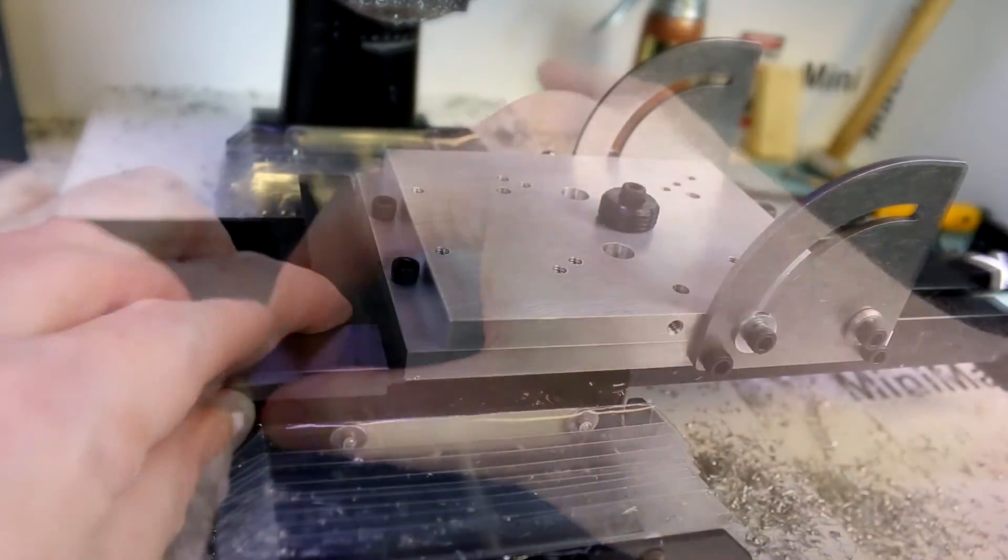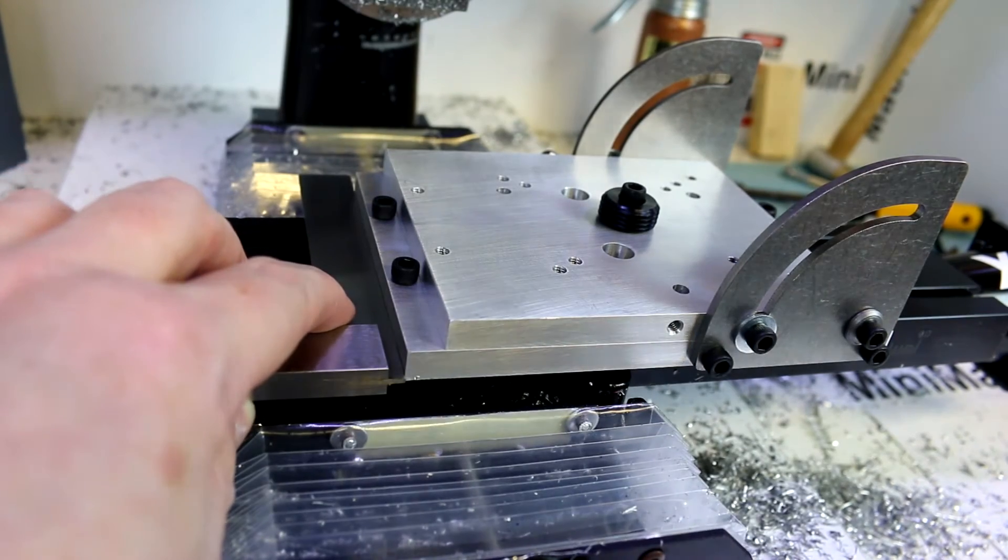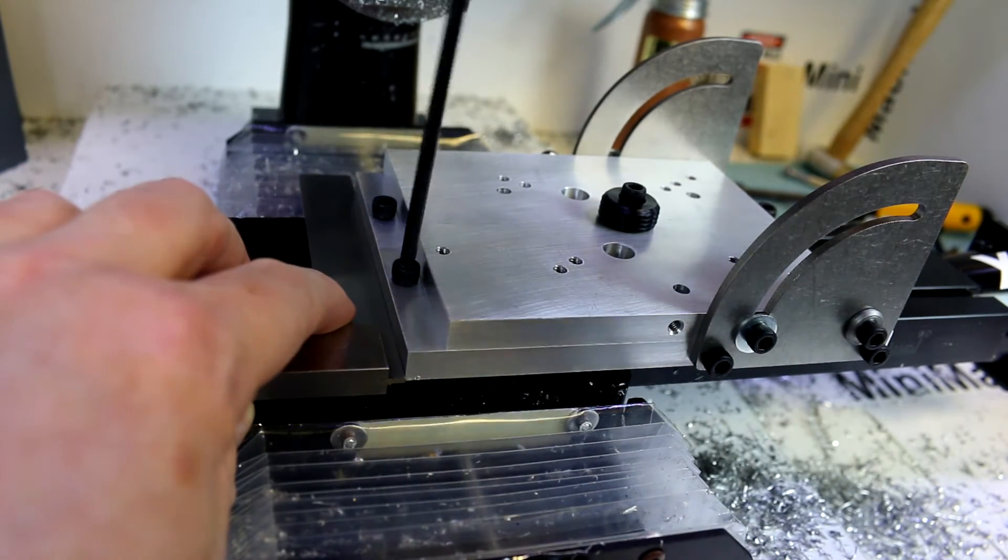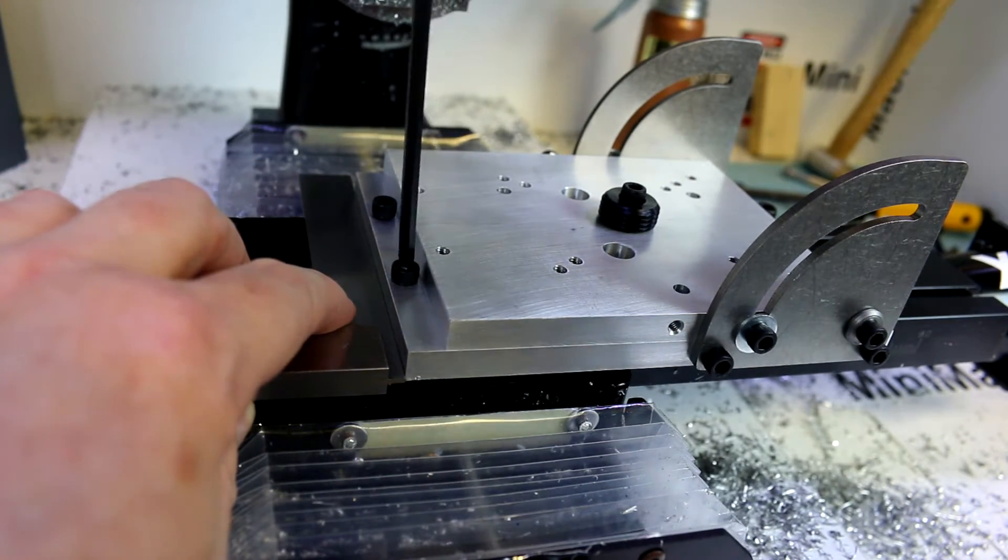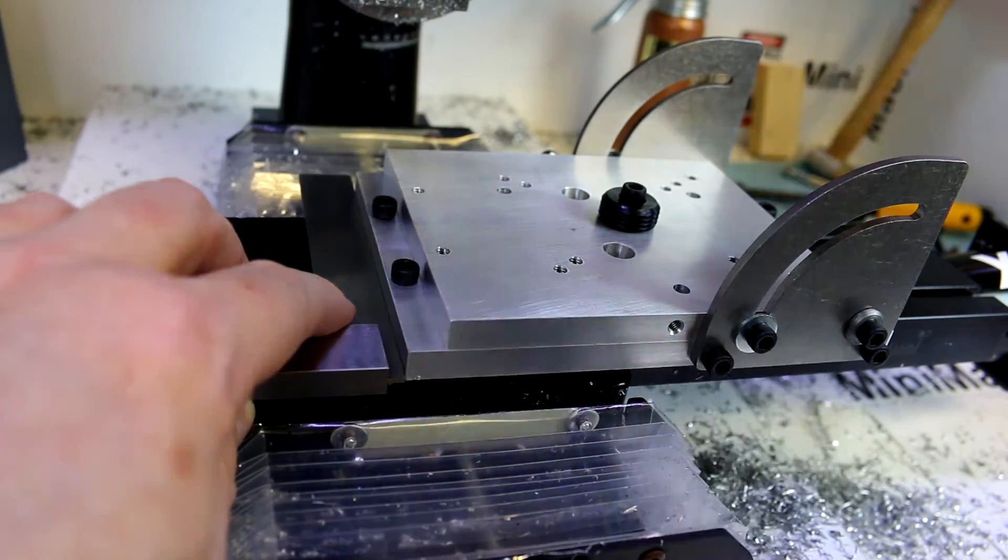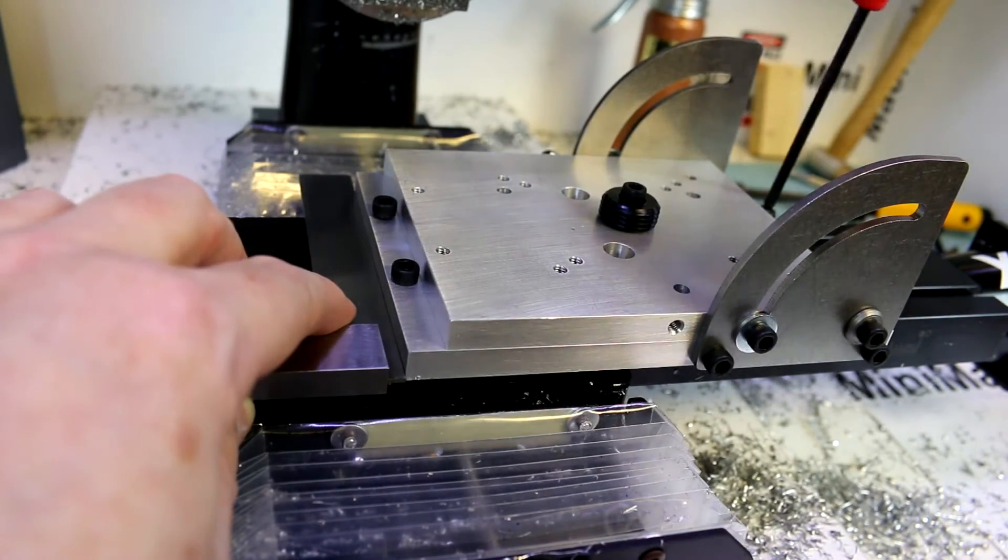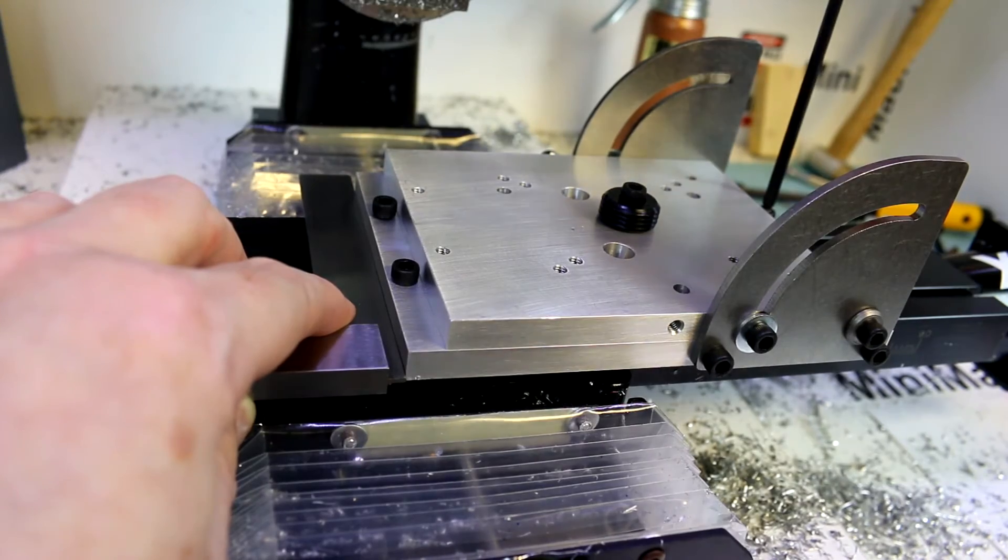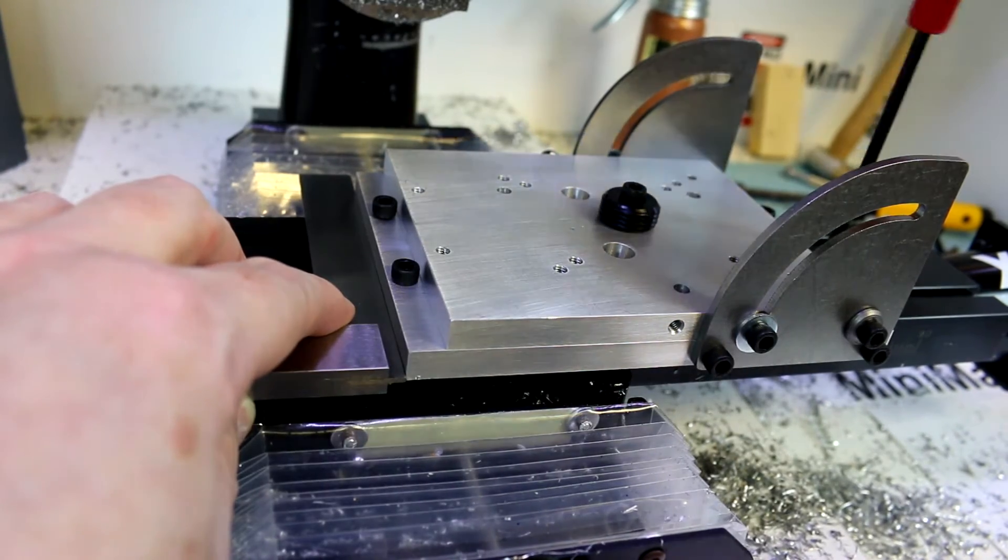So the angle plate is an accessory we haven't used yet, but it will make the cutting of these angles and chamfers a lot more consistent and easier than just kind of the rough tilt that we showed before in the vise.